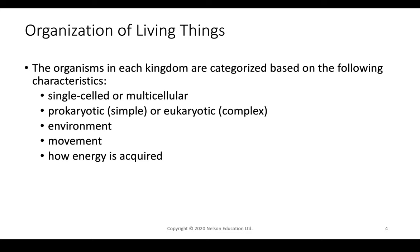The way that we organize these organisms into categories or kingdoms is based on multiple characteristics. The first is whether they are a single-celled organism or a multicellular organism. Most single-celled organisms are prokaryotic — very simple — not organized in such a complex way as eukaryotic cells. We also consider the environment in which they live, the kind of movement they produce, and how they acquire their energy: from sunlight like plants, or from other resources like animals eating other living beings.